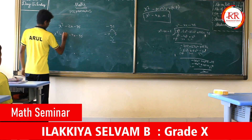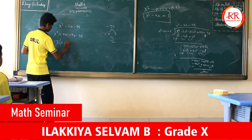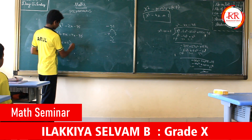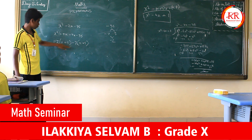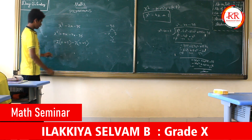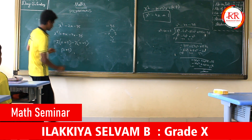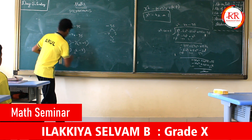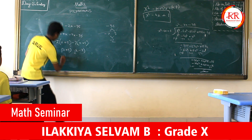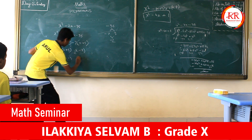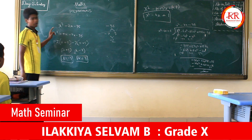Taking x as common from x² plus 5x gives x(x plus 5), and taking minus 7 as common from minus 7x minus 35 gives minus 7(x plus 5). So (x plus 5) is common, giving (x plus 5)(x minus 7). Setting each factor to zero: x plus 5 equals 0 gives x equals minus 5, and x minus 7 equals 0 gives x equals 7. These are the other two zeros of the biquartic equation.